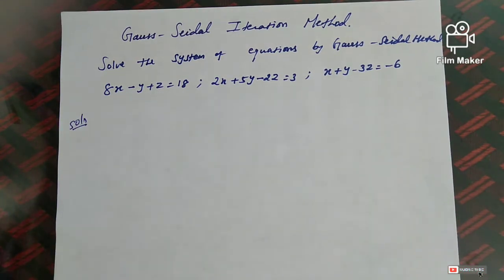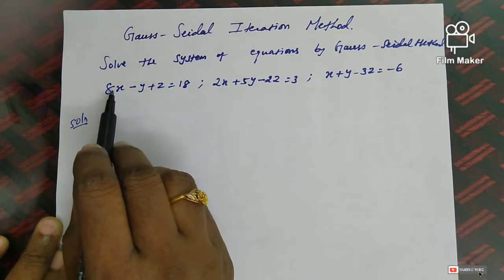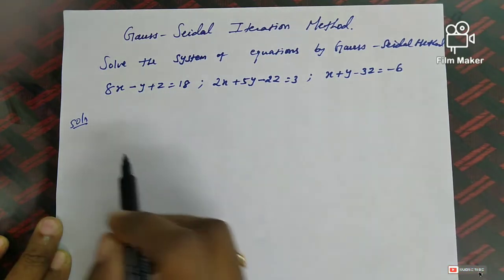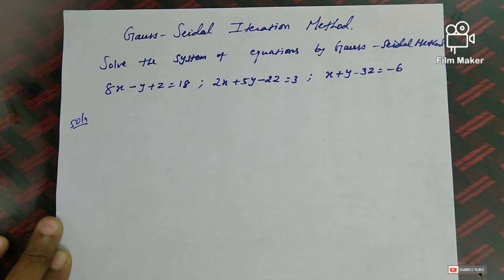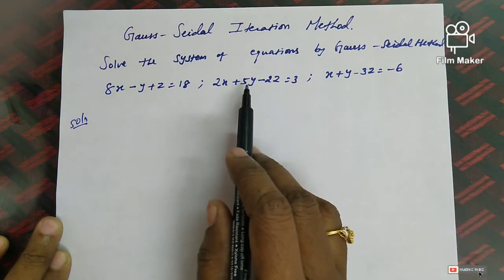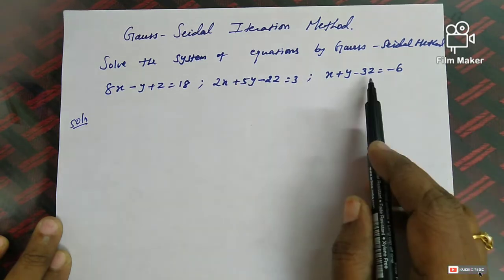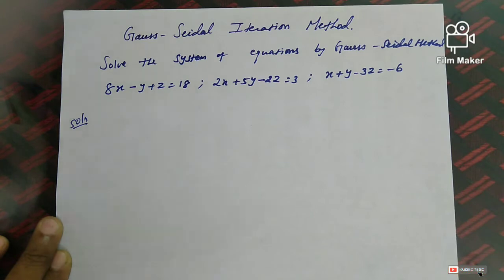Look at the first equation: 8x minus y plus z equals 18. As discussed in the previous lecture, the iteration method can only be applied when the given system of equations is in diagonally dominant form. If it is not diagonally dominant, we have to rearrange the system. In the first equation, the leading element is 8, which is greater than the absolute values of the remaining two elements (1 and 1) in that row. Similarly, the second diagonal element also satisfies the condition, and the value 3 satisfies the diagonal dominant property. So the given system is already in diagonally dominant form.